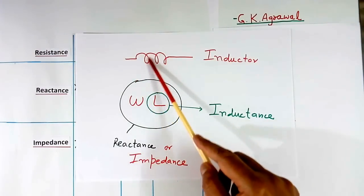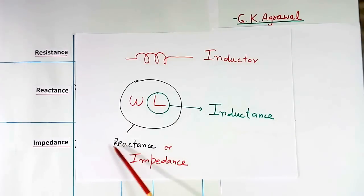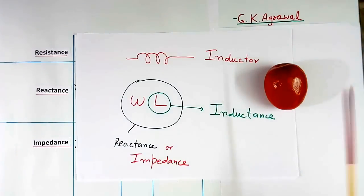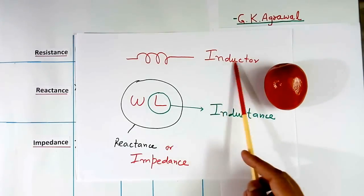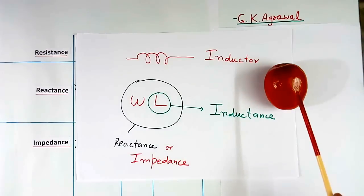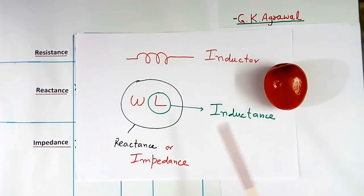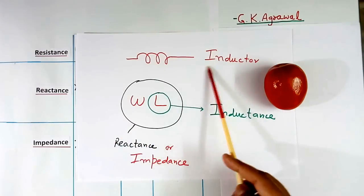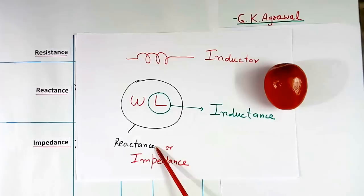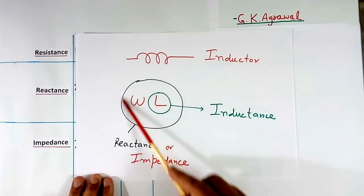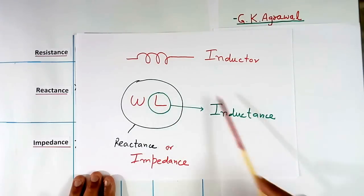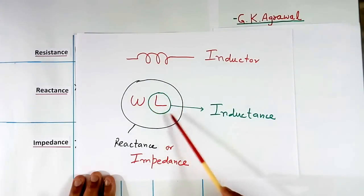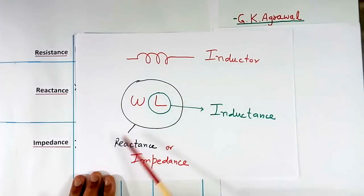Here I have shown one inductor. This is the name, and reactance is the value. For example, suppose we have one tomato — tomato is the name of that item. Similarly, inductor is the name of this item. Then we say mass of this tomato is, say, 50 grams. Similarly, reactance of this inductor is, say, 50 ohm or 60 ohm. So omega L is called the reactance, and L is called the inductance. So the component name is inductor, its inductance value is L, and the full expression omega L is the reactance value.